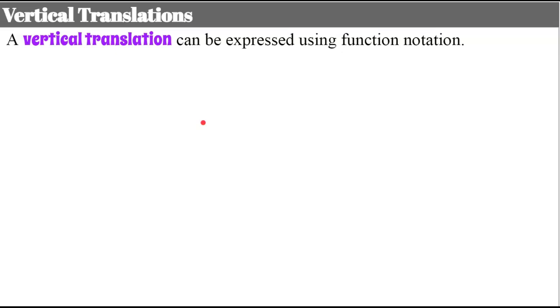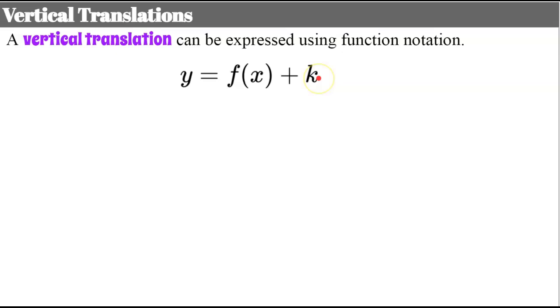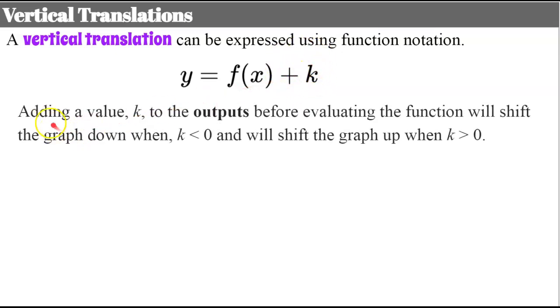Now let's talk about vertical translations. A vertical translation can be expressed using function notation as well. Vertical refers to our outputs, and we add a constant K. Adding a value K to the outputs will shift the graph down when K is less than zero, and shift the graph up when K is greater than zero.